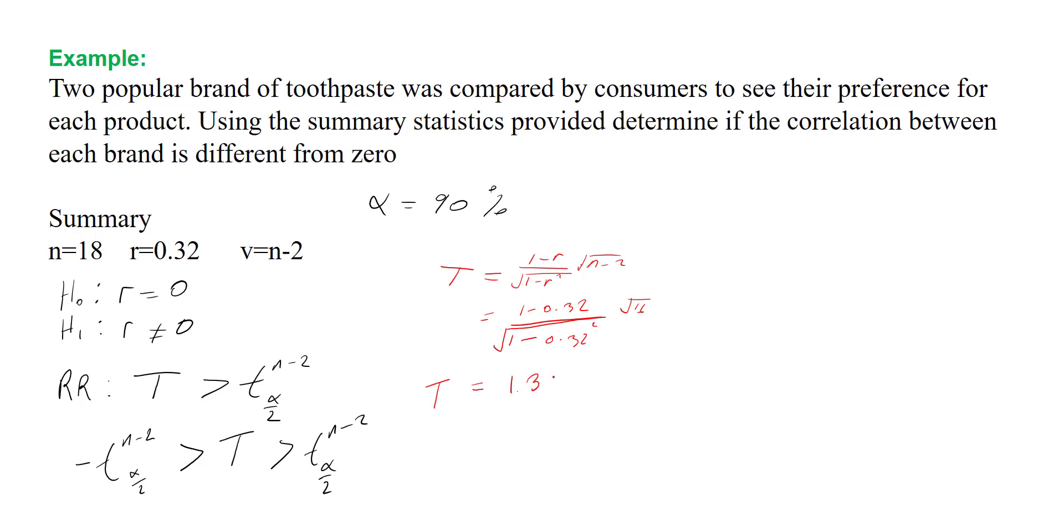Now that we've calculated our test statistic, we aim at calculating our critical value at alpha equal to 0.10. Our t at (n-2, alpha/2), which is basically t(16, 0.05), we're going to look up in our t distribution table.